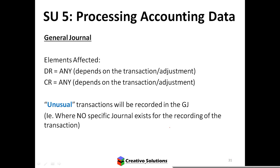An example of an unusual transaction is depreciation. Depreciation is not cash — it relates to the decreasing worth of an asset like a laptop. It's not debtors or creditors either, so it goes to the general journal. Another example would be adjustments like prepaid expenses, which are also not cash or credit transactions, so they also go to the general journal. Other accounting transactions that don't fit the specific journals go to the general journal.